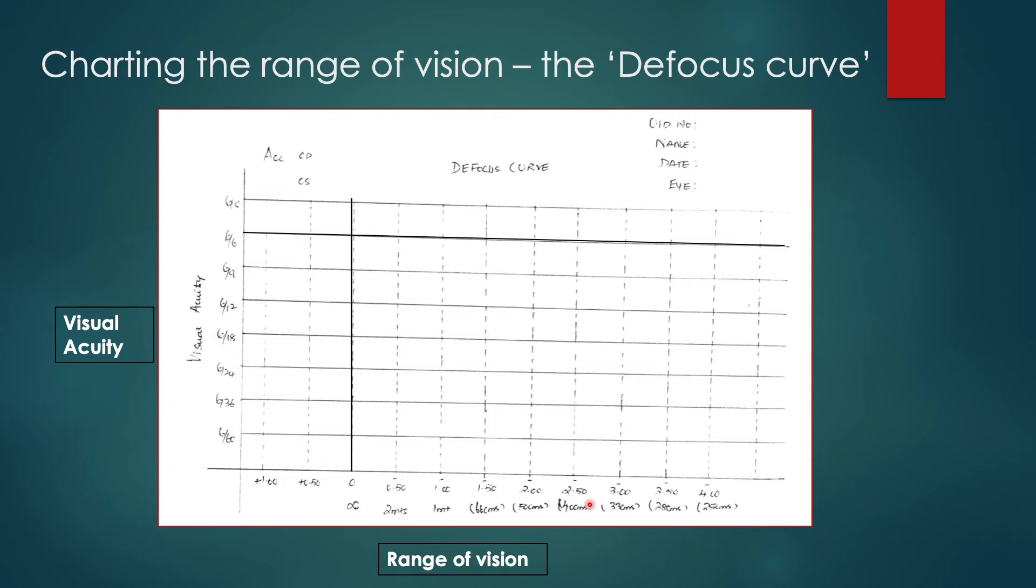The negative diopter can be taken to represent the varying testing distances as already discussed. Therefore, a minus 0.5 diopter add tests the visual performance at a distance of 2 meters, whereas a minus 1 diopter add tests the visual performance at 1 meter. A minus 2 diopter add represents a testing distance of 50 centimeters, minus 3 diopter add 33 centimeters, minus 4 at 25 centimeters and so on. This can be easily drawn by using a sheet of paper and a pencil and scale.